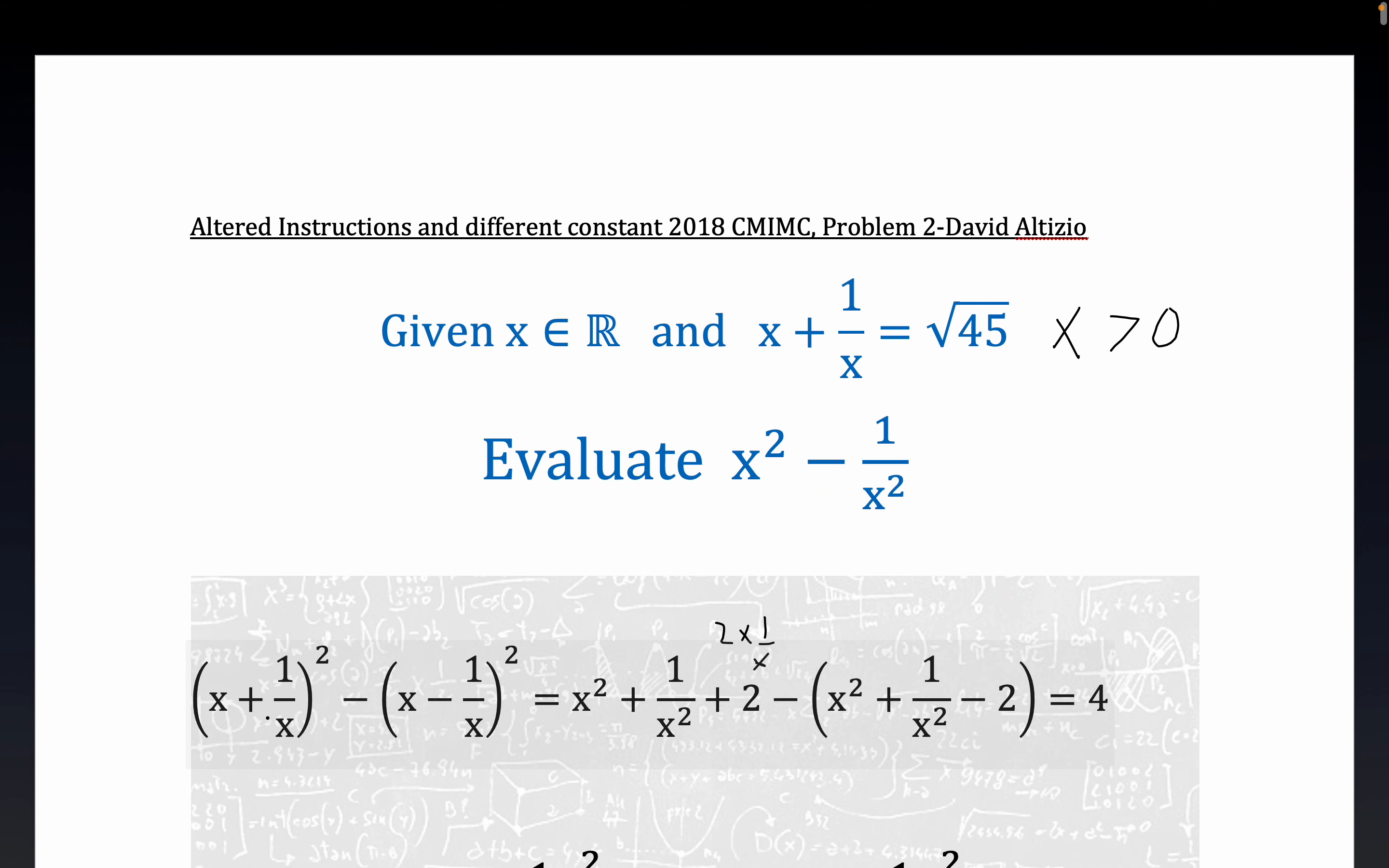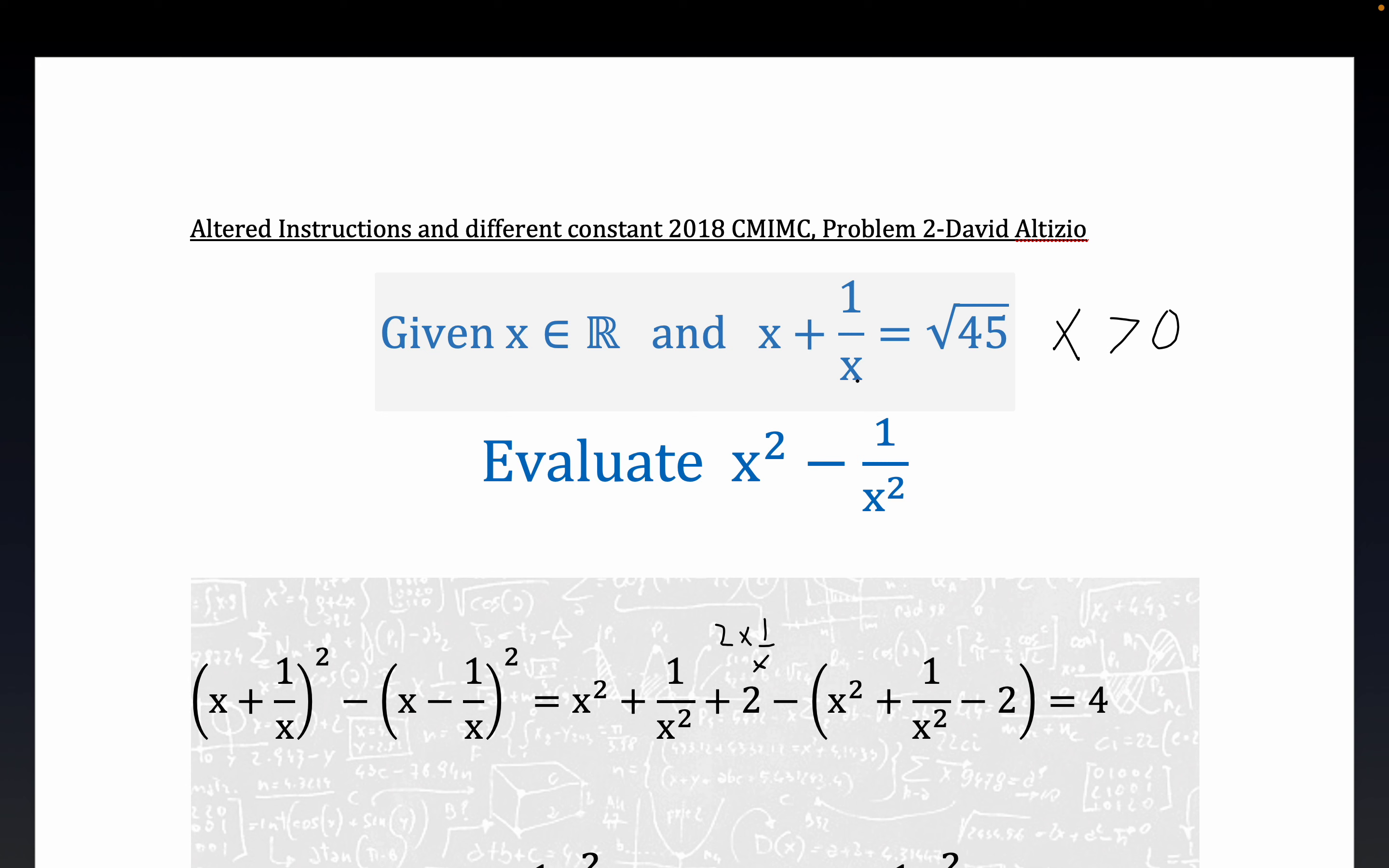Well, x times 1 over x is 1, provided x is not equal to 0, and it's not because 0 wouldn't be a solution to this, right? In a similar fashion, you get minus 2 right here. So everything cancels in this whole expansion right here. This whole expression is just equal to the constant 4.